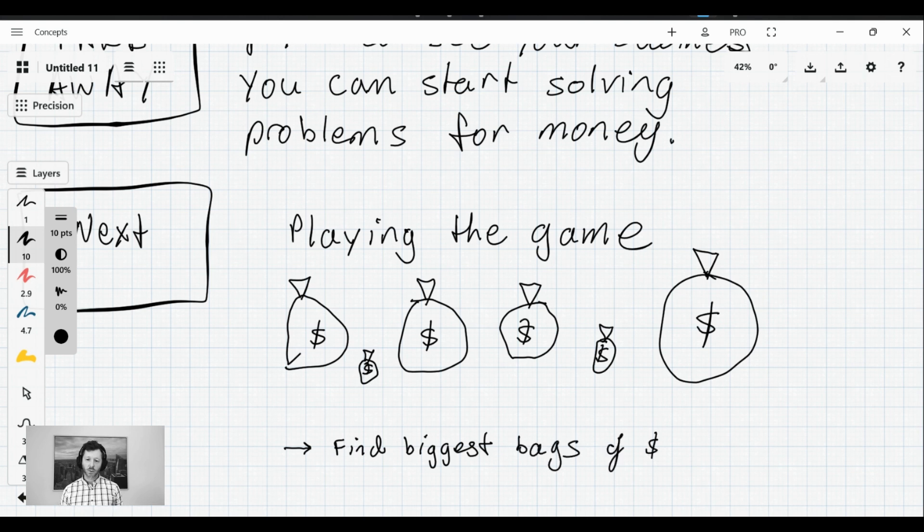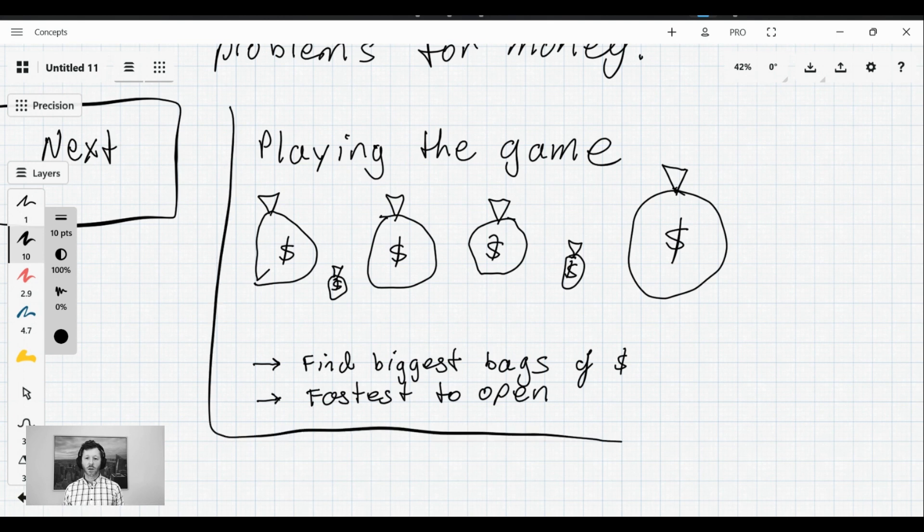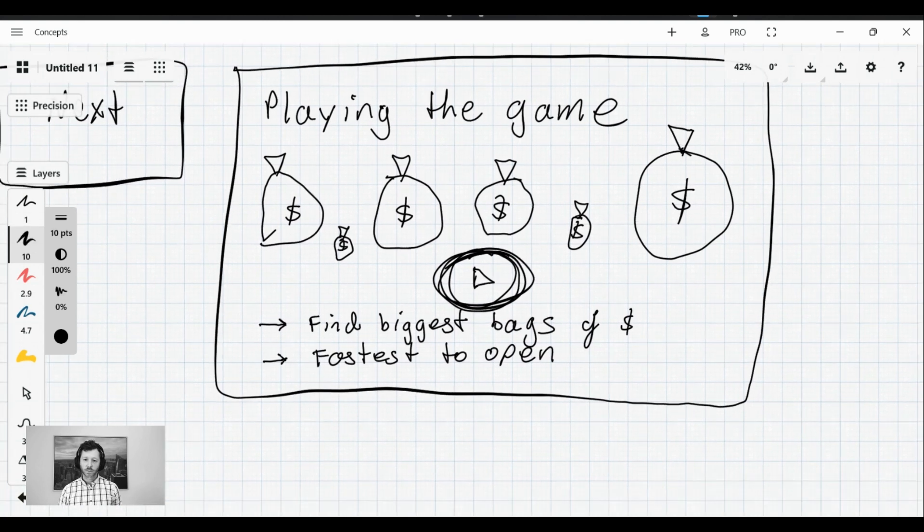And two, we're going to realize that bags of cash that we can open faster are more valuable to us than bags of cash that take a long time to open. So if you can open one bag of cash, i.e. solve one problem in three hours, and another problem is going to take you 100 hours to solve, this gives us a way to start prioritizing what's next in our business.